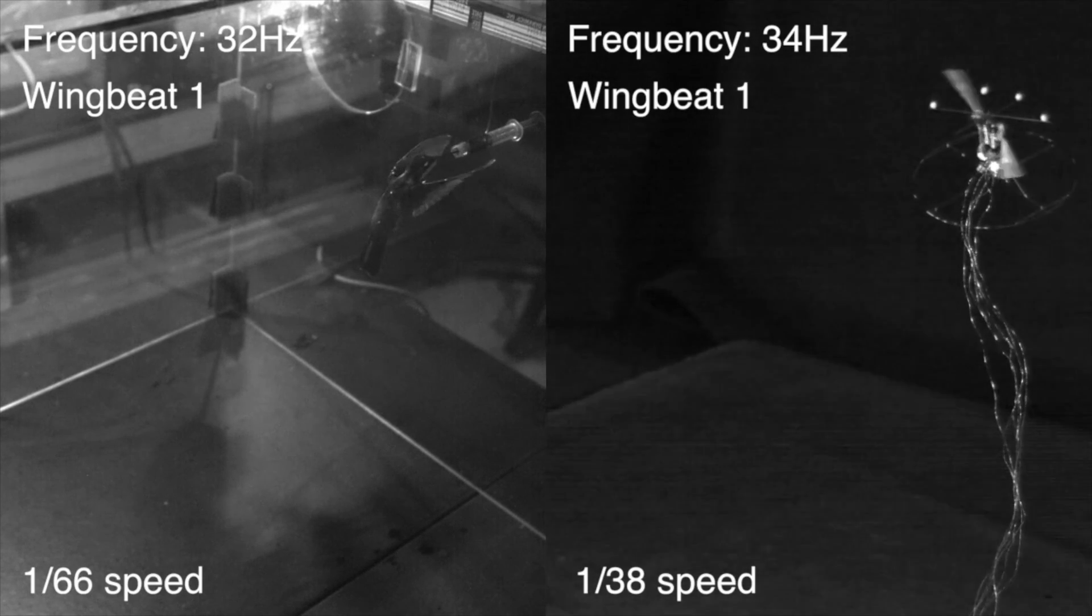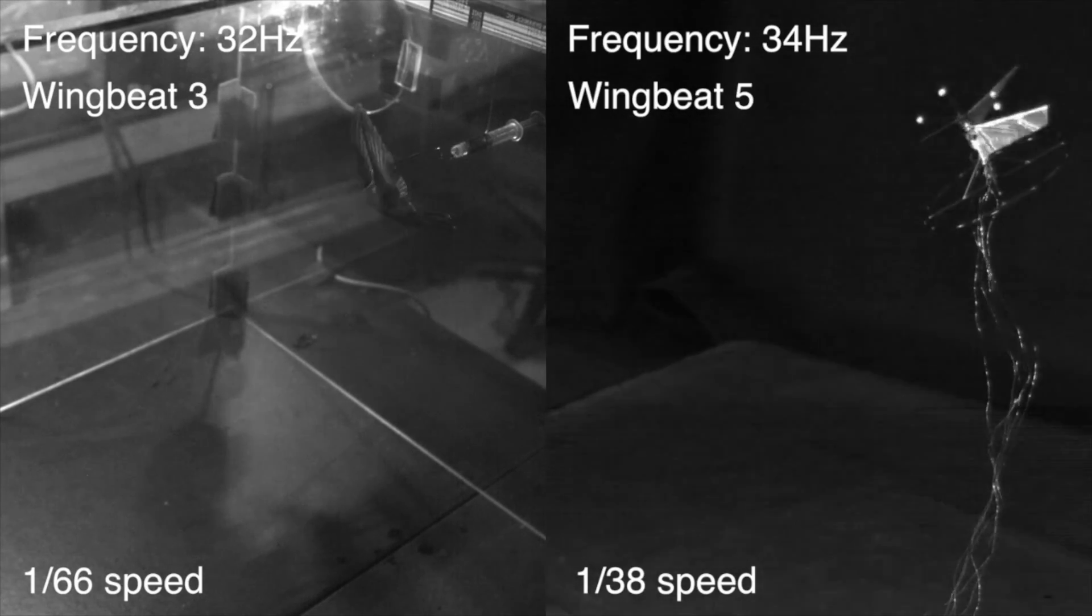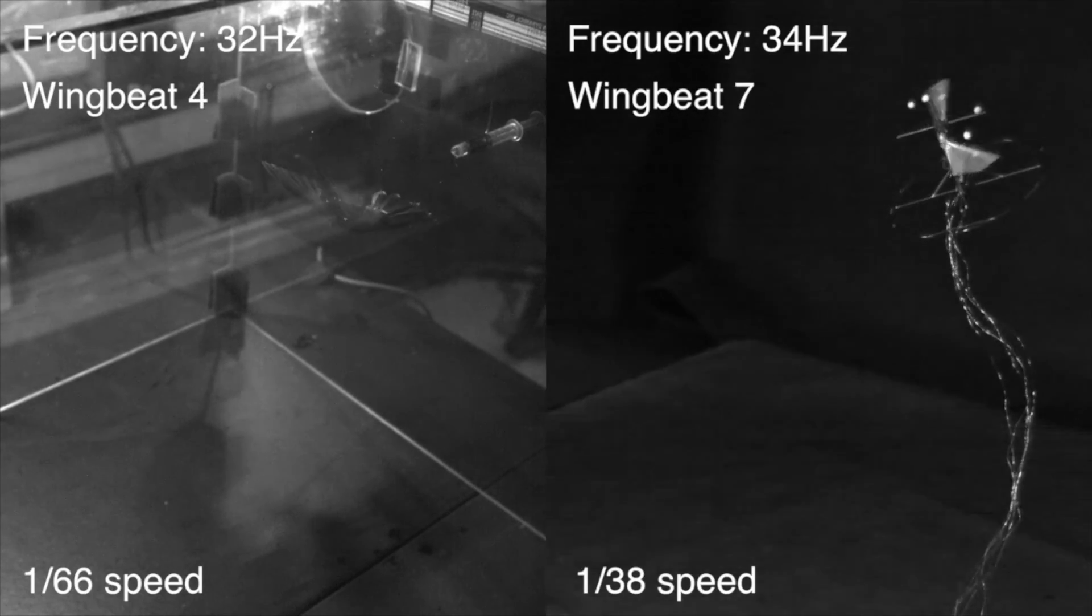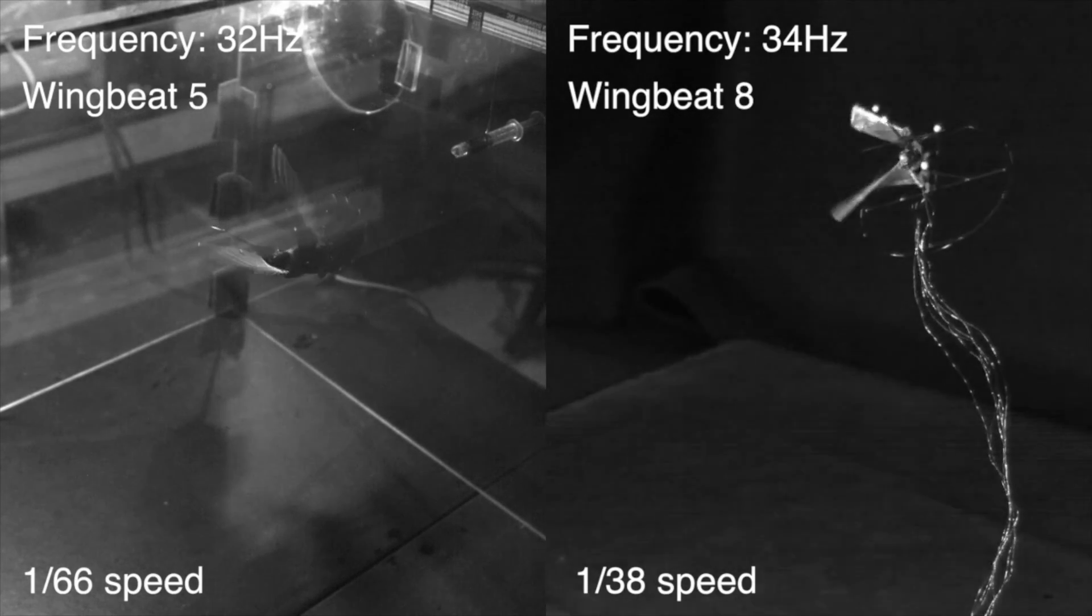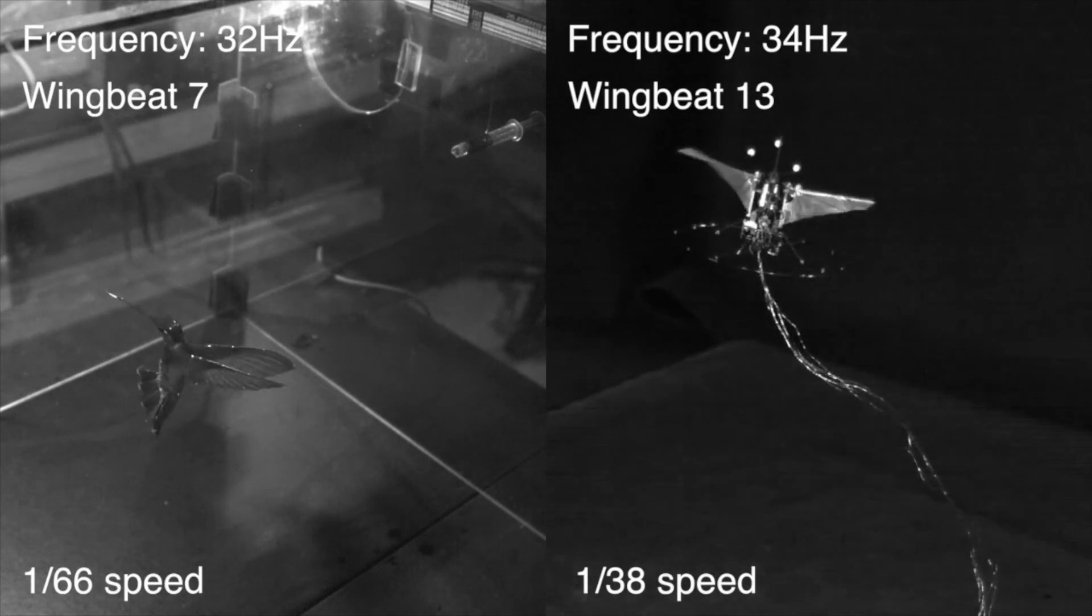Despite the limited wing actuation of the robot, the optimized policy produced a behavior similar to that of the hummingbird. This result is very promising as it shows a flapping wing vehicle can produce animal-like extreme maneuvers even with one and a half times the body mass.